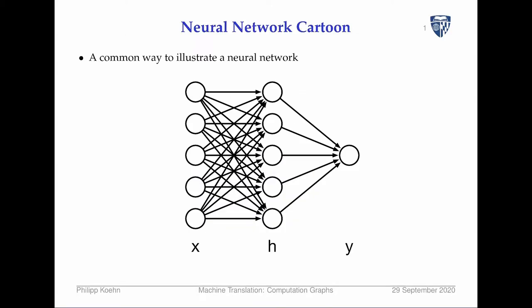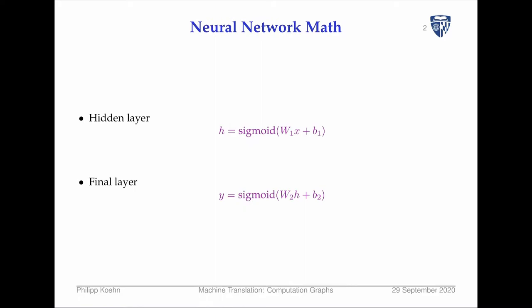Here is our neural network cartoon — a fairly common way to illustrate neural networks. It's a little bit deficient because we don't really say what's happening inside the nodes and what the errors actually mean. So we always have to also specify the computations that we do, the activation functions, and the nature of the weight matrices separately. This is how we also have to mathematically specify what the computations are.